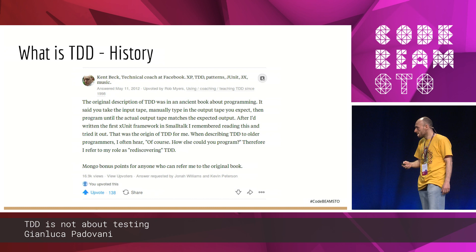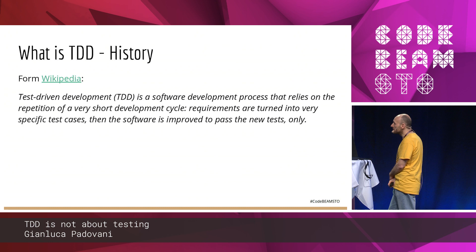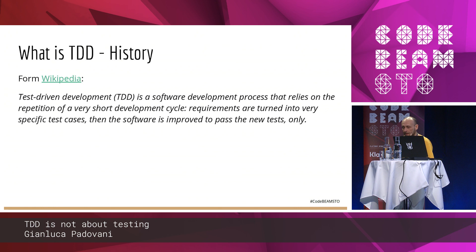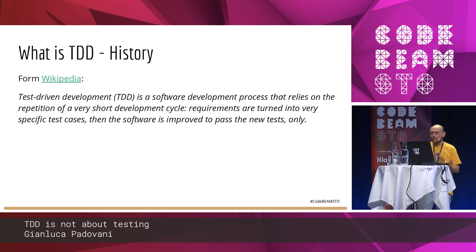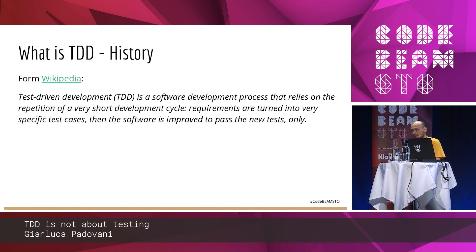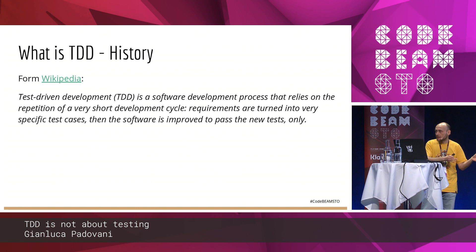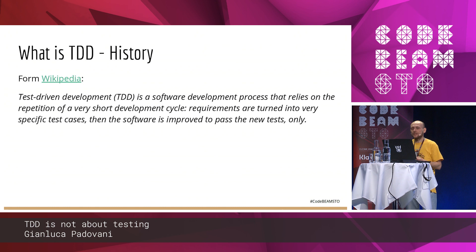From Wikipedia: TDD — test-driven development — is a software development process that relies on the repetition of a very short development cycle. The short part is very important — we have a repetition of very small cycles. Requirements are turned into very specific test cases, then the software is improved to pass the new test only. You should not write all the tests and all the production code, or all the production code and then the tests.